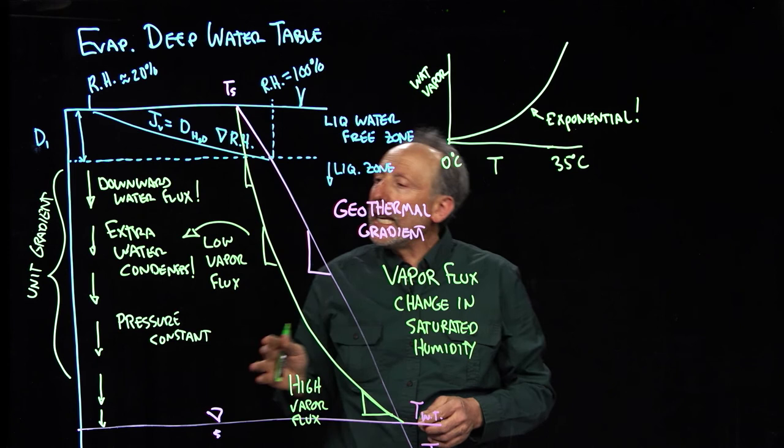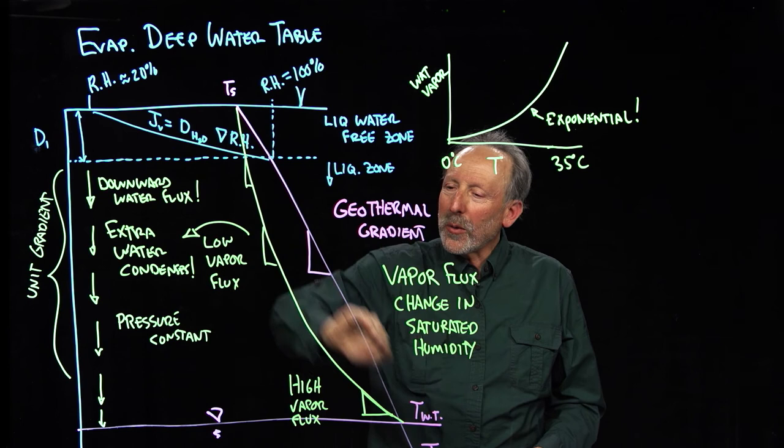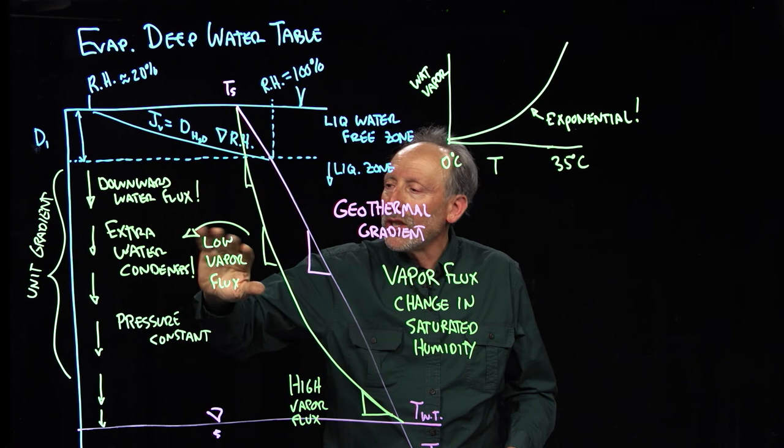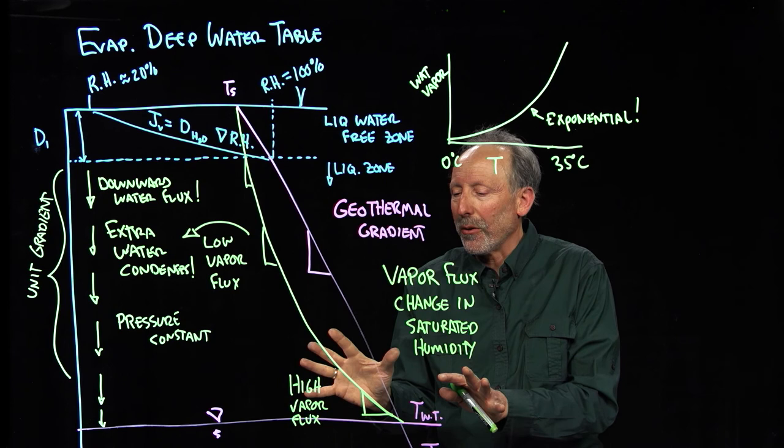But the key point here is the geothermal gradient gives rise to a uniform gradient in temperature. That gives rise to a decreasing gradient in humidity with high vapor flux at the bottom, lower vapor flux at the top. That gives rise to the condensation as you go, and so downward liquid flow. So in our deep vadose zone,